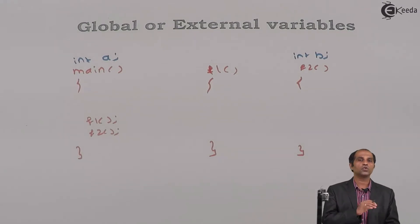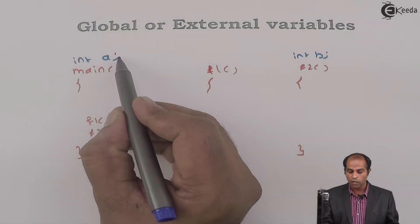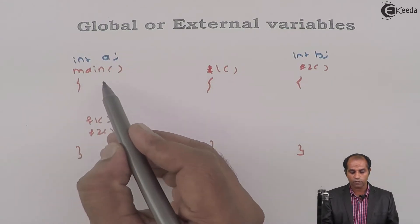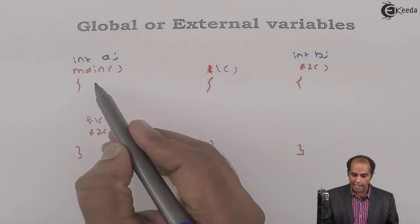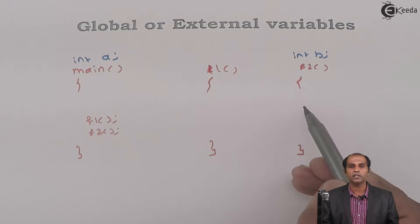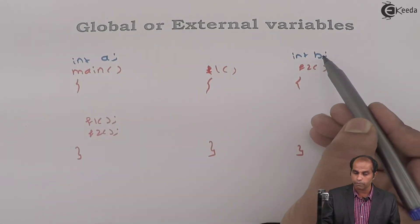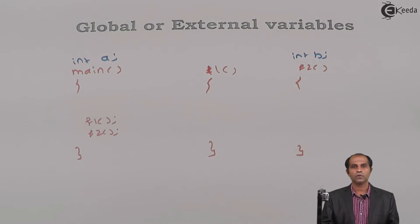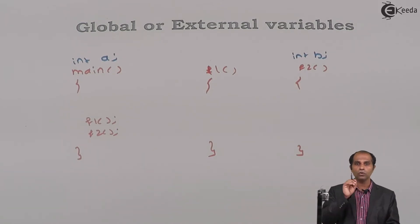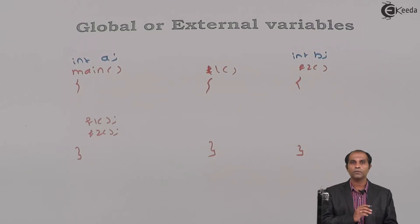The scope or visibility of a global variable is available to all functions which appear after the declaration. After the declaration of a, the functions main, f1, and f2 all appear, so a is accessible within main, f1, and f2. Since b is declared after main and f1, b is visible only to f2 — meaning global variables are visible to all those functions which appear after their declaration.